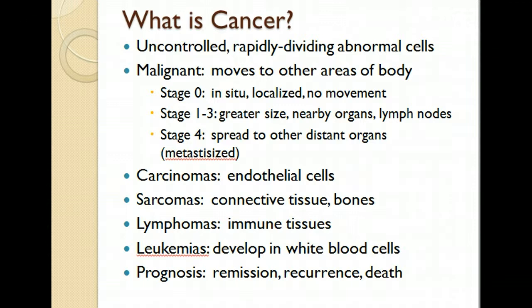So what is cancer? It's uncontrolled, rapidly dividing abnormal cells. Malignancy is where it moves to other areas of the body. Cancer needs to go through proper diagnosing and staging before treatments begin. Stage 0, called in situ, is localized — just in that particular organ, not moved to any body parts. Stages 1 to 3 may involve a larger tumor, spread to other tissues, or invasion of the lymph nodes.